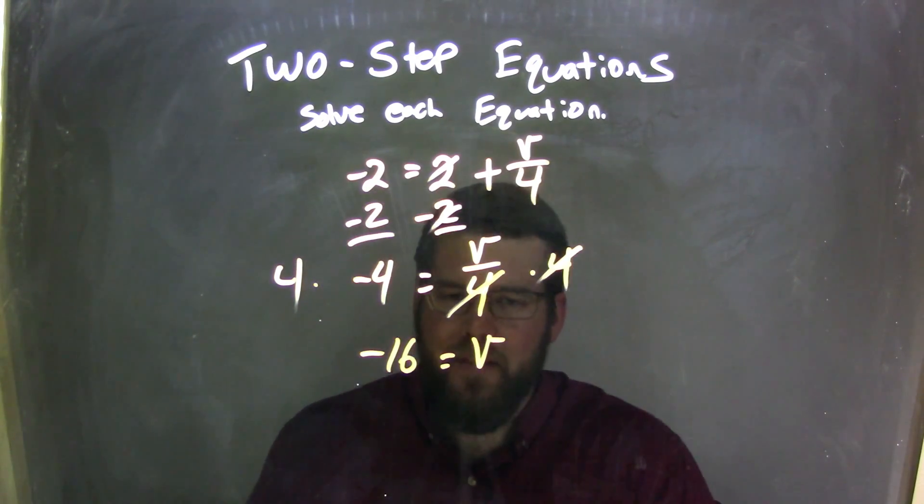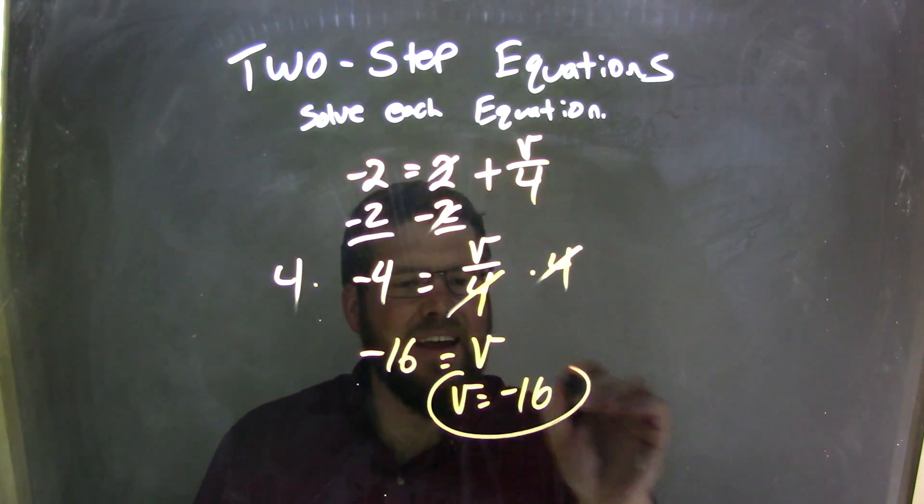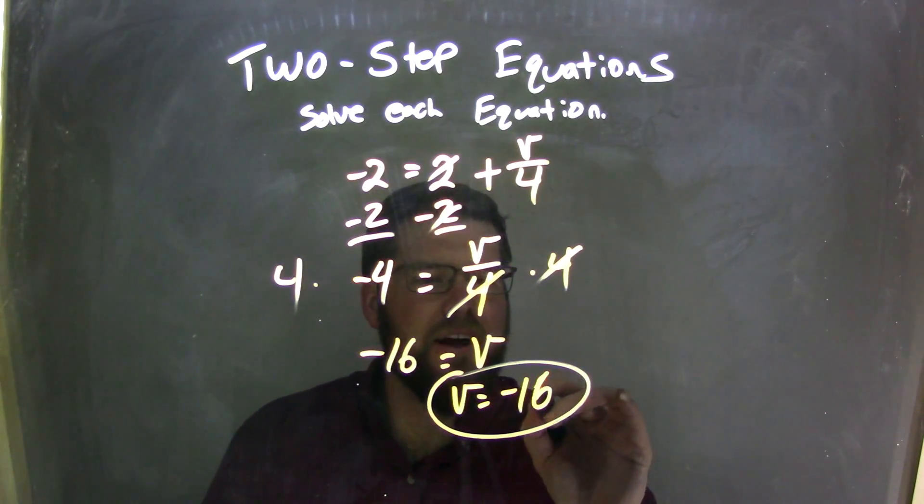And I'm going to rewrite this to have v come first, so v equals a negative 16, and that is, in fact, my final answer.